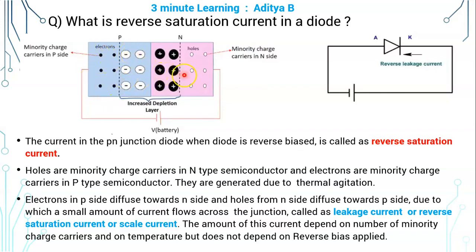Electrons in P side diffuse towards the N side, so the direction of current is from N side to P side. Likewise, holes in N side diffuse to P side and hence the direction of current is from N side to P side.